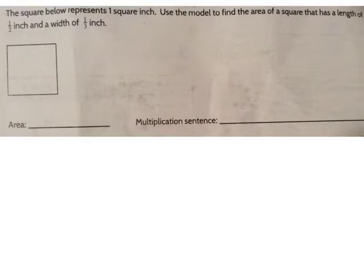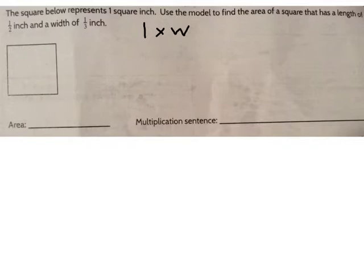We've talked about multiplying fractions by whole numbers. Today we're going to talk about how to multiply a fraction times a fraction. I know that when I find the area of a square or rectangle, I can use the formula length times width. We can use area to help us discover how to multiply fractions. The square below represents 1 square inch. Use the model to find the area of a square that has a length of 1 half inch and a width of 1 third inch.